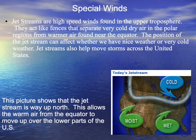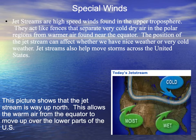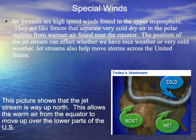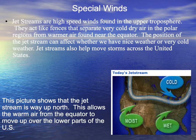We understand the basics of how wind is caused — wind is caused by moving air, which results from differences in air pressure. There are different kinds of winds. The jet streams are very high speed winds found in the upper troposphere. The troposphere is the layer of the atmosphere that we live in. Jet streams act like fences that separate cold, dry air from the polar regions from the warmer air found near the equator. The position of the jet stream can affect whether we have nice weather or very cold weather. Jet streams also help move storms across the United States.